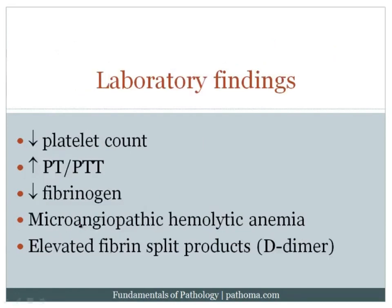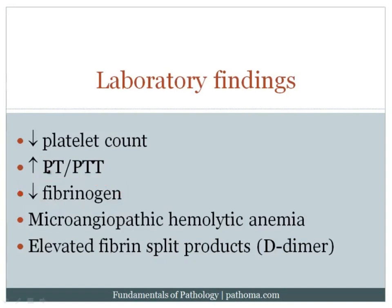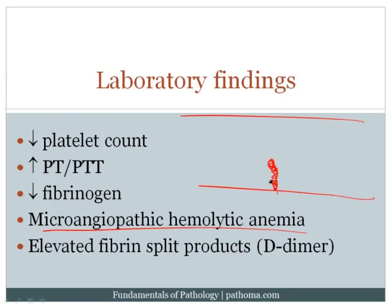The laboratory findings of DIC are straightforward. Because we are making platelet-fibrin thrombi, we consume platelets — so the platelet count goes down. We also consume coagulation factors, so the PT and PTT go up. Fibrinogen, the key linker molecule for platelet aggregation in thrombi, is consumed and goes down. We also see microangiopathic hemolytic anemia: partial thrombi shear red blood cells as they cross, producing schistocytes.